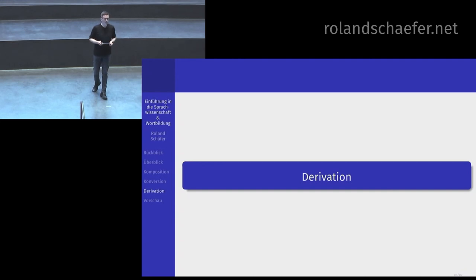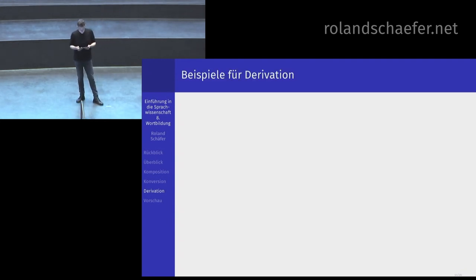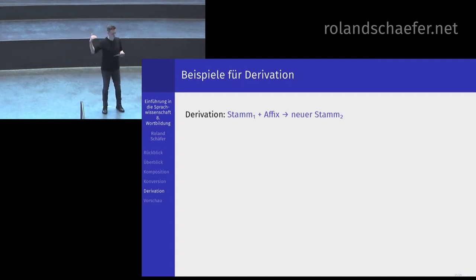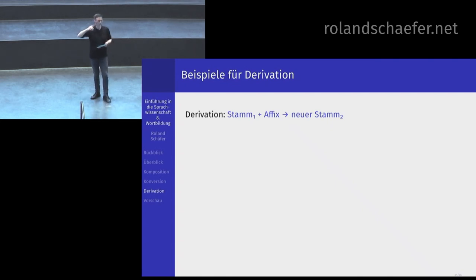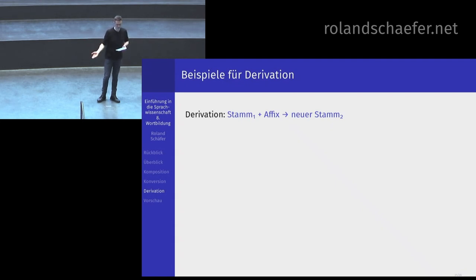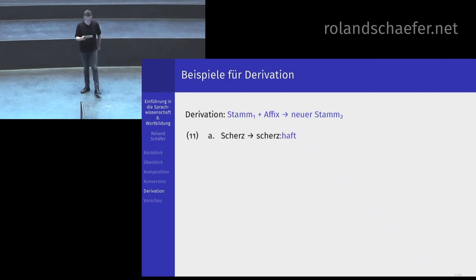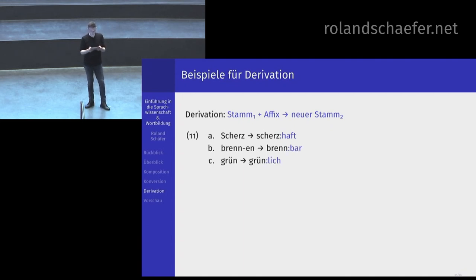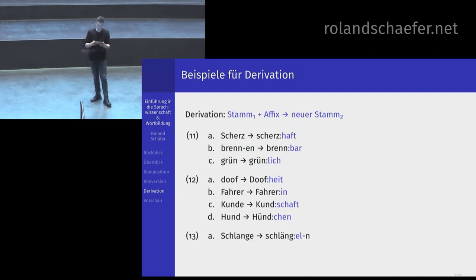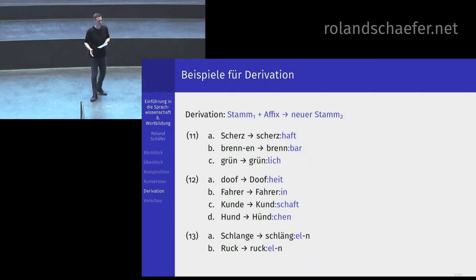Die Derivation – das geht jetzt ruckzuck – ist der letzte große Teilbereich der Wortbildung. Das Muster bei der Derivation: Sie nehmen einen Stamm und einen Affix, und es kommt ein neuer Stamm raus. Was ist ein Affix zur Erinnerung? Affixe sind die Nichtstämme in komplexen Wörtern – Sie können sie voranstellen als Präfix, wie in Unding, oder als Suffix hinten dranhängen, wie in Gelegenheit. Beispiele: Scherz wird zu scherzhaft, Brennen zu brennbar, Grün zu grünlich, Doof zu Doofheit, Fahrer zu Fahrerin, Kunde zu Kundschaft, Hund zu Hündchen. Sie hängen was hinten dran und die Bedeutung ändert sich, meistens aber auch die Wortklasse.